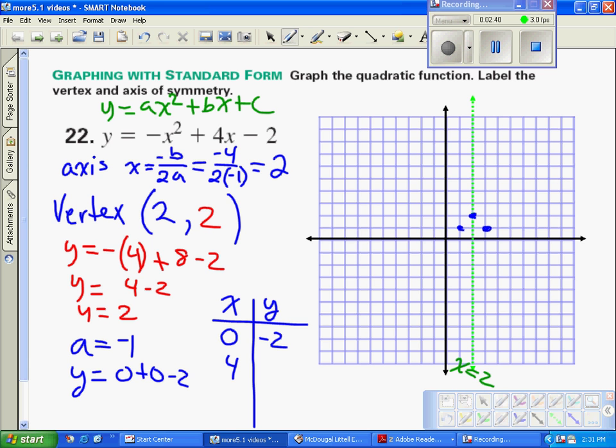If we do the same thing for 4, we plug that in. We get y is equal to negative 4 squared is 16, plus 16, 4 times 4 is 16, minus 2. And again, we get negative 2. So those 2 points are going to be 0, negative 2, and 4, negative 2.